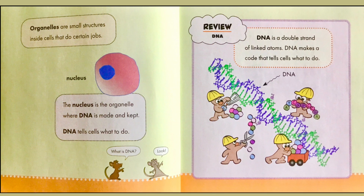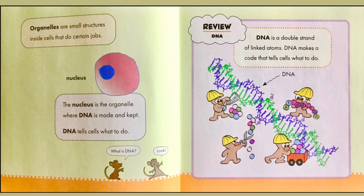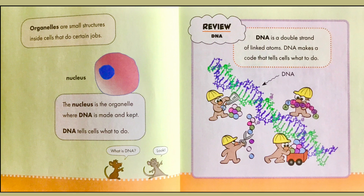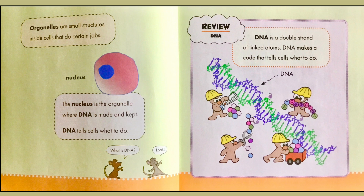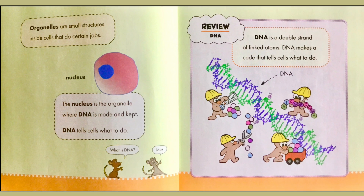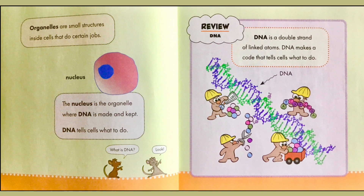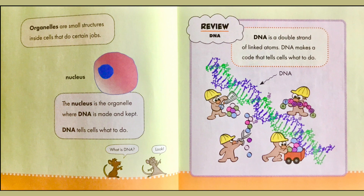DNA tells cells what to do. DNA is a double strand of linked atoms. DNA makes a code that tells cells what to do.